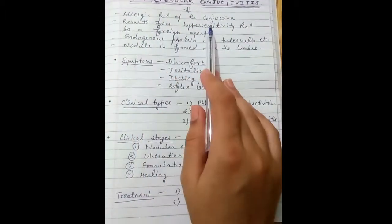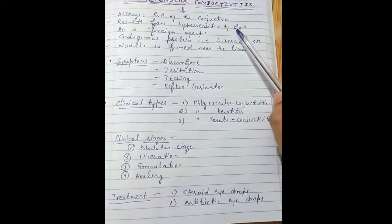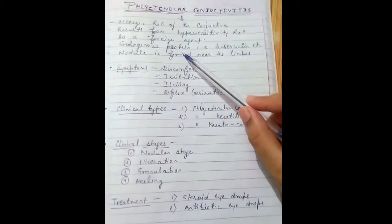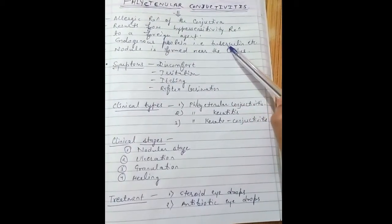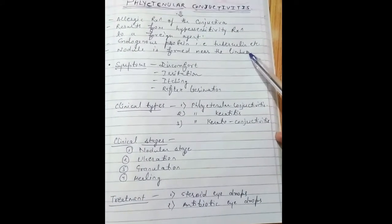It is an allergic reaction of the conjunctiva which results from hypersensitivity reaction to a foreign agent, and that is endogenous proteins like tuberculin. In this, a nodule is formed near the limbus.